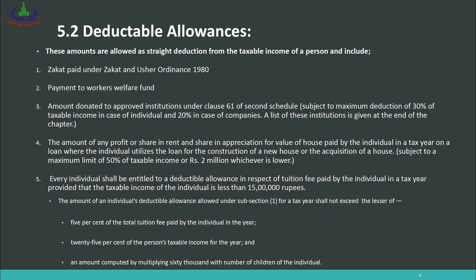Deductible Allowances: Deductible allowances are another method by which your taxable income is reduced. The mechanism is that certain specific amounts are subtracted from your total income to arrive at taxable income. These amounts are allowed as a straight deduction from the taxable income of a person and include the following categories.